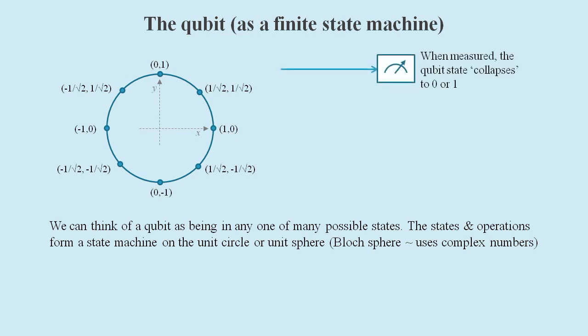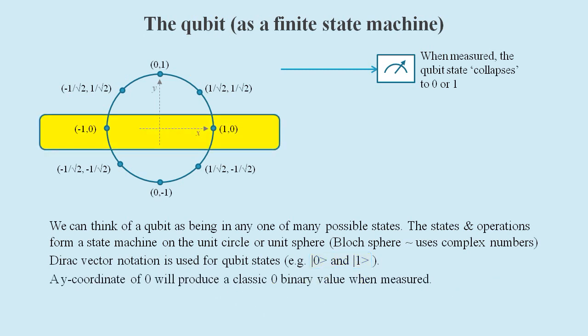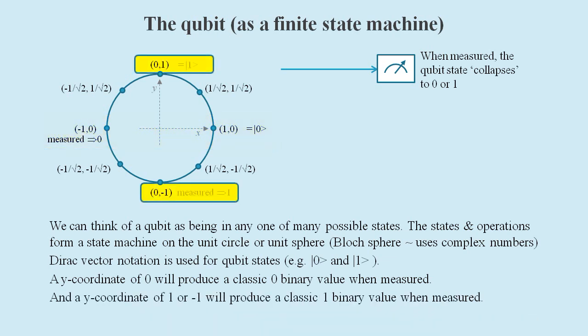Regardless of which of these eight states the qubit is in, when we measure it the state is said to collapse into a classical bit value of zero or one. Qubit states can be shown using Dirac vector notation, which shows the value of a vector between a bar and an angle bracket. If a qubit is in a state where the y coordinate is zero, then when measured it will produce a classical zero binary value. And if a qubit is in a state where the y coordinate is one or minus one, then when measured it will produce a classic one binary value.